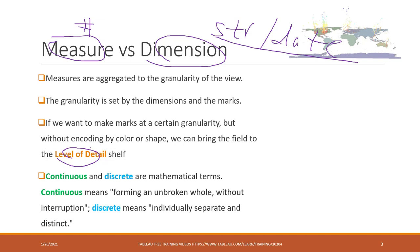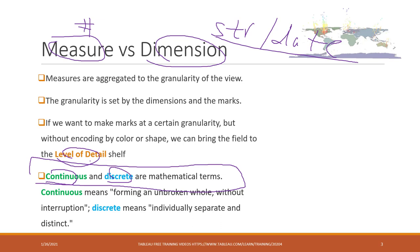In addition to measures and dimensions, we also have the concept of continuous data and discrete data — these are mathematical concepts. Normally measures are considered discrete and dimensions are considered continuous, but it is not always the case. Continuous means values forming an unbroken whole without interruption, while discrete means individually separate and distinct. Keep in mind that dimensions and measures can both be continuous and discrete, especially for measures.